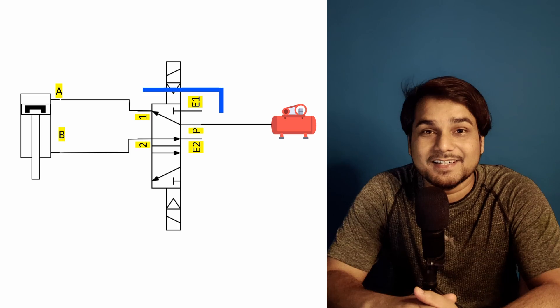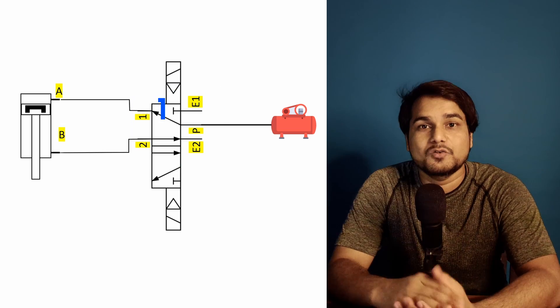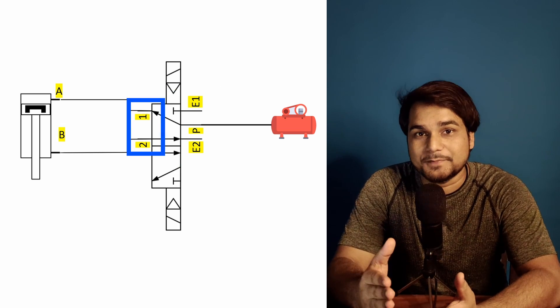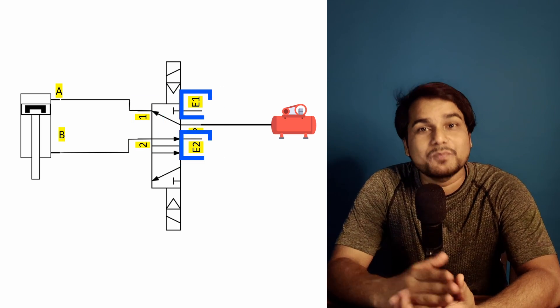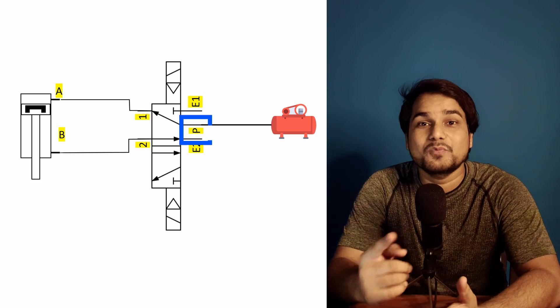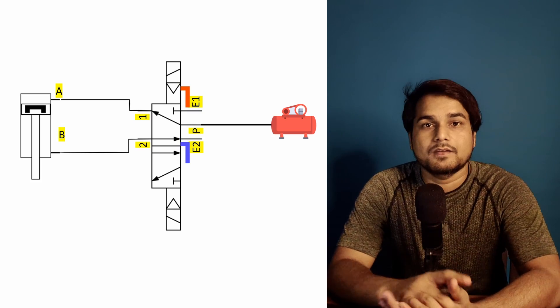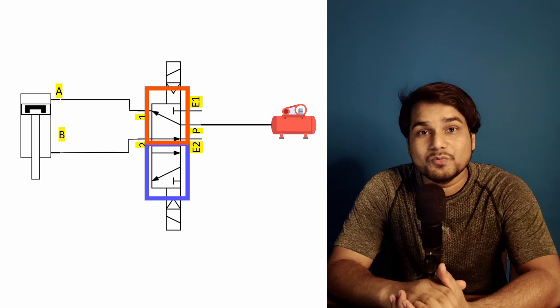So what is a 5/2 directional control valve? We can say a 5/2 directional control valve has 5 ports: 2 ports for connecting the actuator, 2 ports for releasing air (exhaust), and 1 port for supplying compressed air. A 5/2 valve also has two position states.